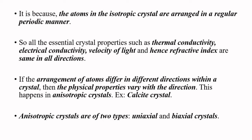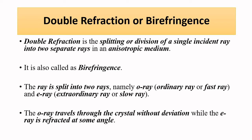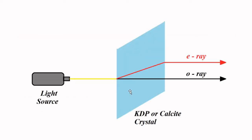Since the refractive index is different in different directions, the velocity of the light wave focused towards a birefringent crystal will be different in different directions. When a light wave is incident on a birefringent crystal — such as potassium dihydrogen phosphate (KDP) or calcite — it splits into two rays.